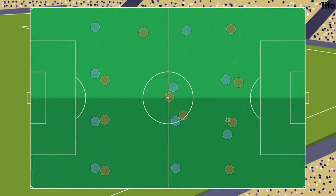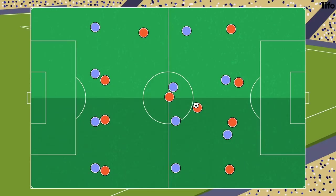The idea of playing between the lines, then, is just a way of attacking that maximises attacking players arriving in these spaces at the same time as the ball. This forces the defending opponents to react and disrupts their defensive positioning. At its best, it's done with quick interchanges and rapid movement so that defenders are always having to react, leaving gaps elsewhere to be exploited.